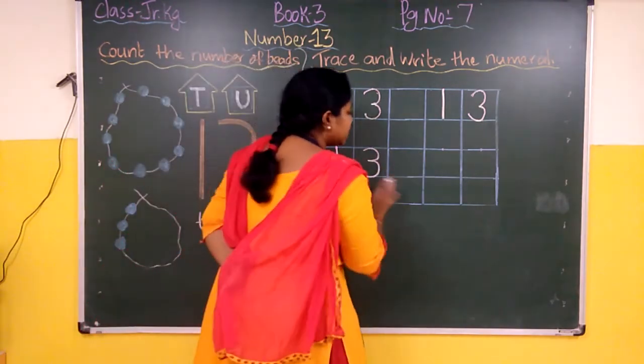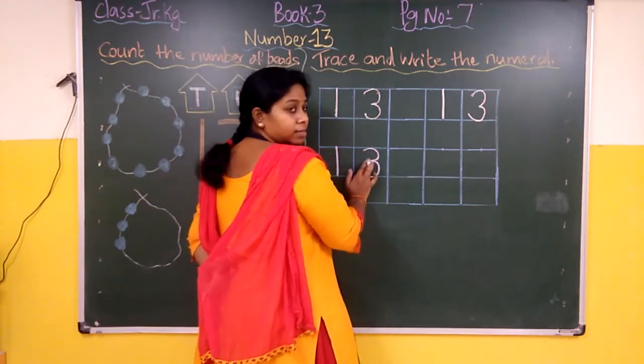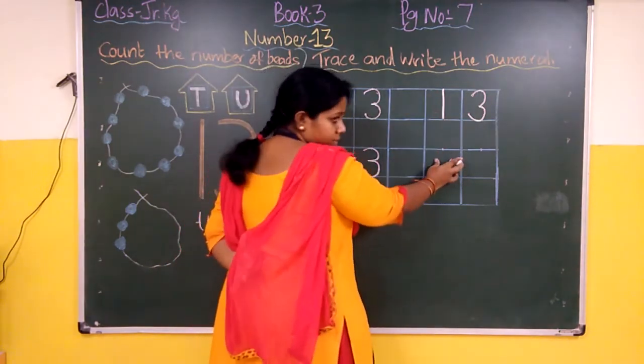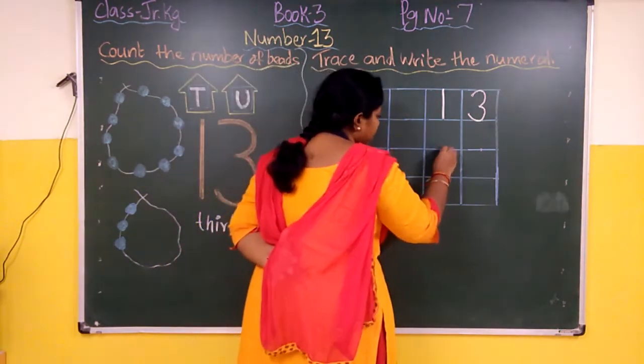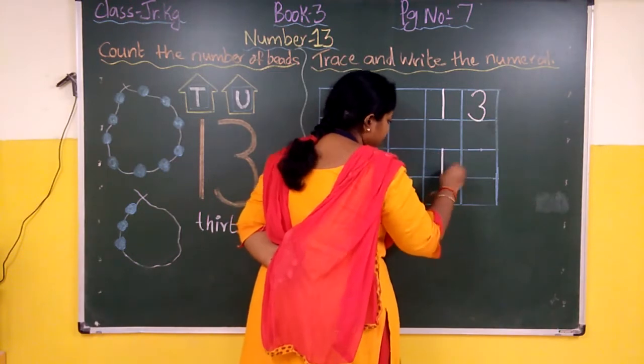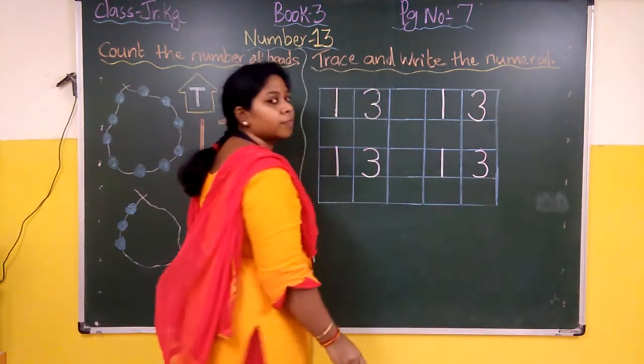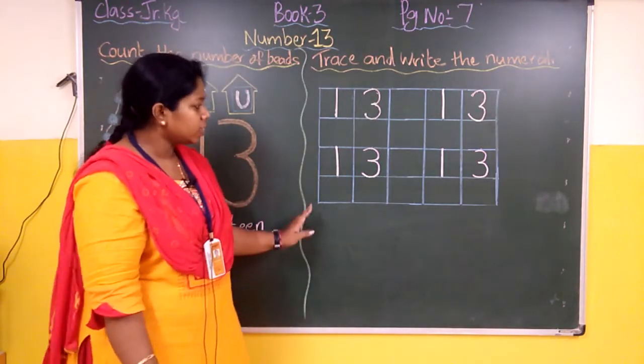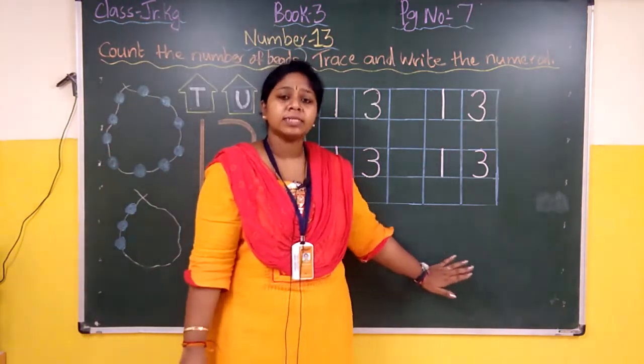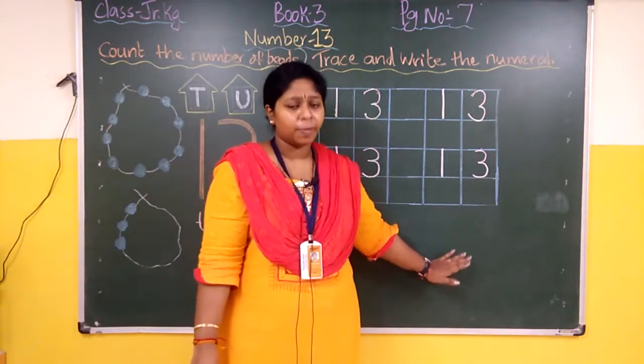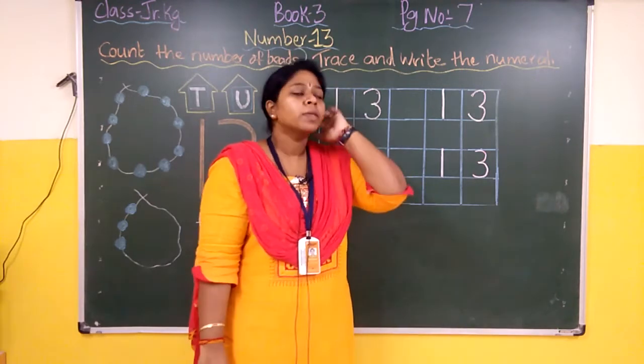Once again, so again after writing down 3, leave a box. Then from the next grey dot and nine you will start writing. 1, 3, 13. Understood? Yes. So in the same way you will complete that remaining writing part also very neatly. Fine.